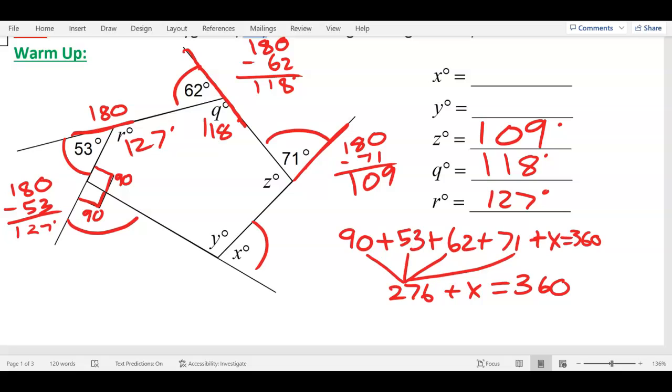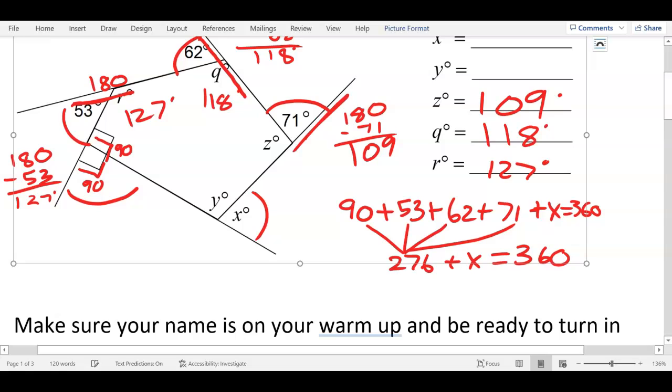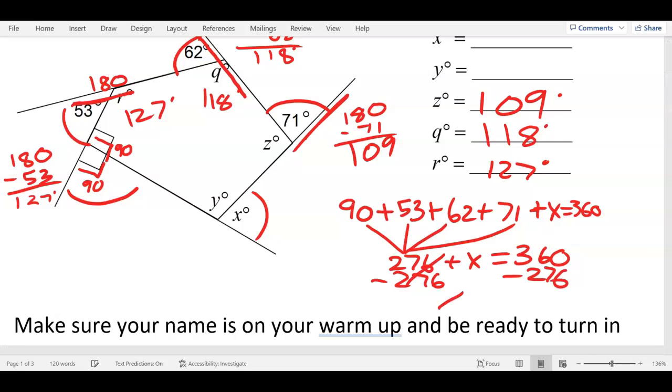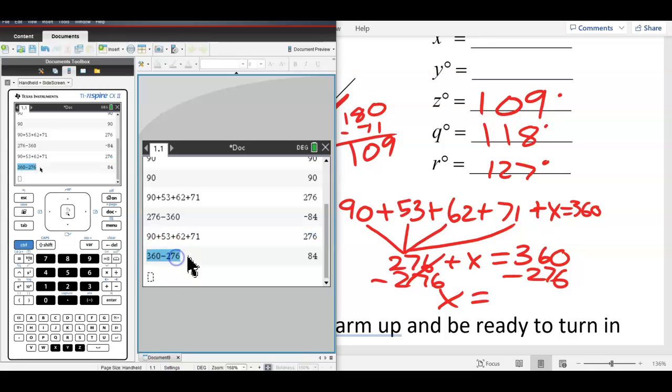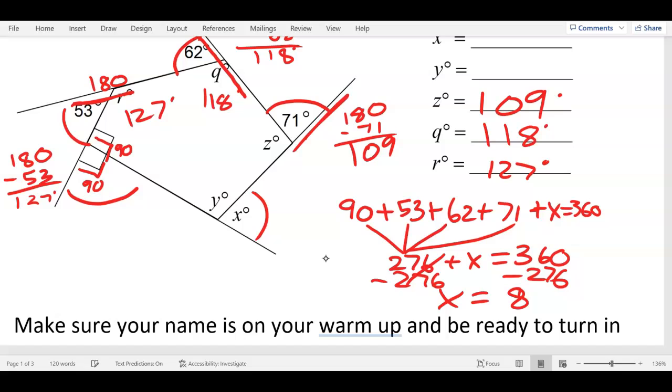I got 84 when I typed it in earlier. So my missing exterior angle is 84 degrees for X.